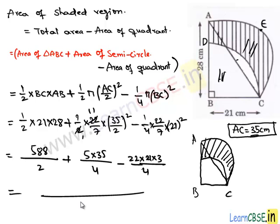We take 4 is the LCM and we get 2 times 588 which is 1176. And 5 times 35 is 1925. And this product is equal to 1386. By simplifying this we get the area which is 1715 divided by 4 meters square. Therefore area of this shaded region is 1715 divided by 4 meters square.